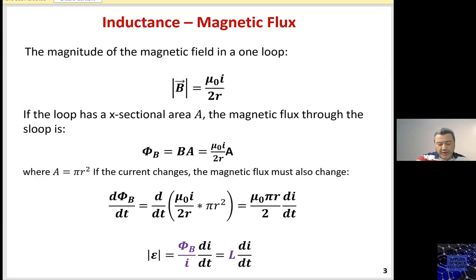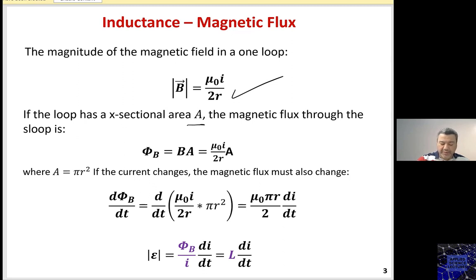We have seen the relationship between the magnetic field and the current in a loop given by B equals μ₀I over 2R. Now, if this loop has a cross-section of area A, then the magnetic flux through this loop is φ = BA, which is μ₀I over 2R times A.